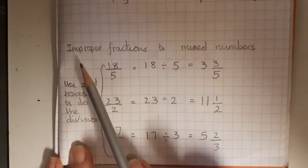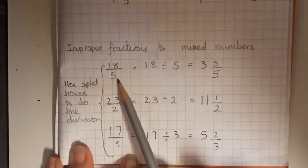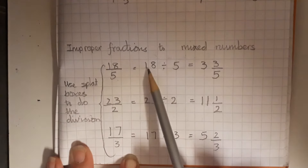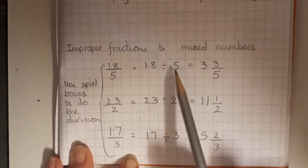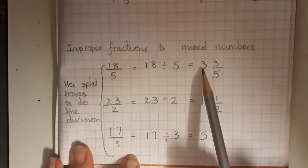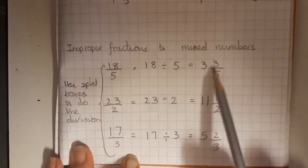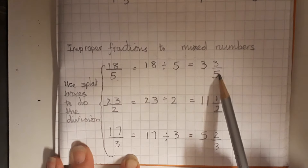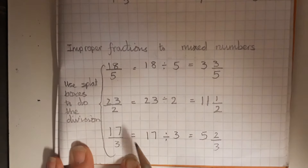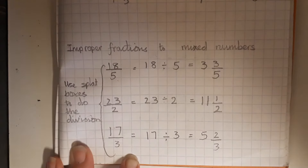So changing improper fractions to mixed numbers: 18 fifths is actually the same as 18 divided by 5. You can get three whole groups of 5 out of 18 with a remainder of 3 fifths. You can use split boxes to do the division if it helps you, and then work through those examples.